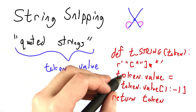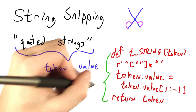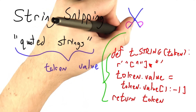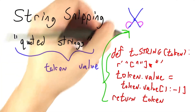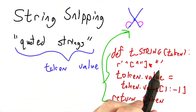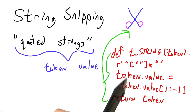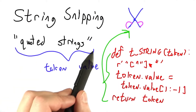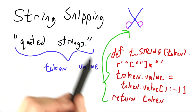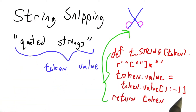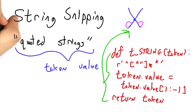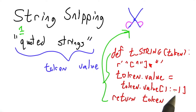Here we have an example of a token definition that does just that. After matching the right kind of string, we take the token value — the entire thing — and we're going to use substring selection starting at character 1, going up to but not including character negative 1.